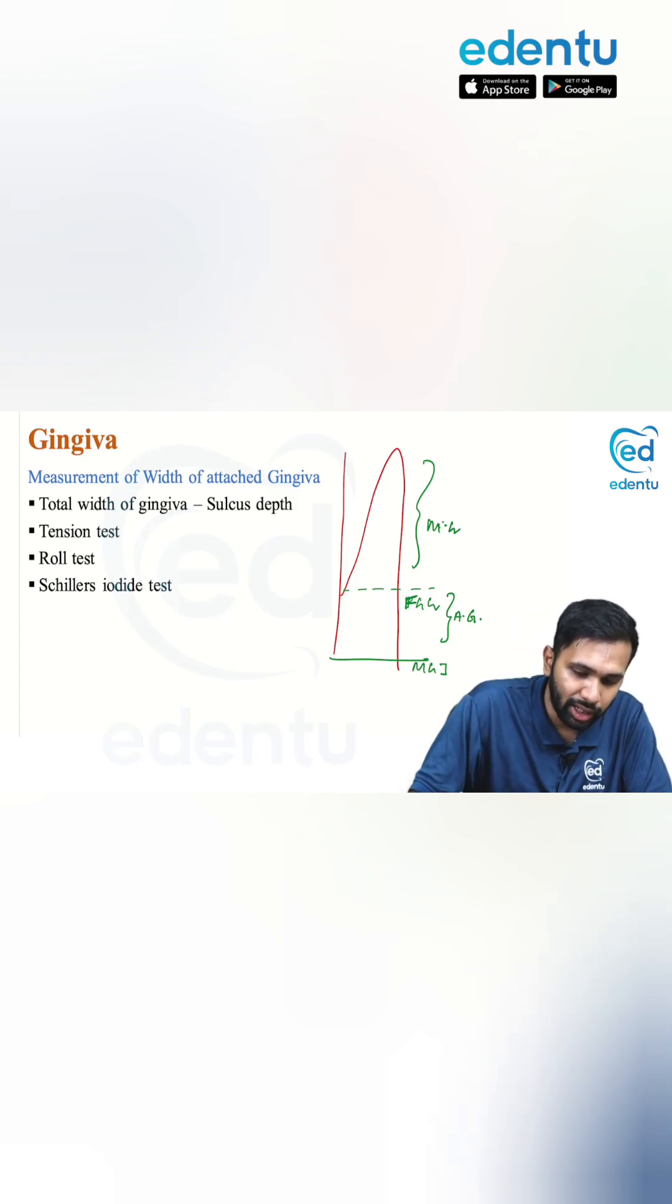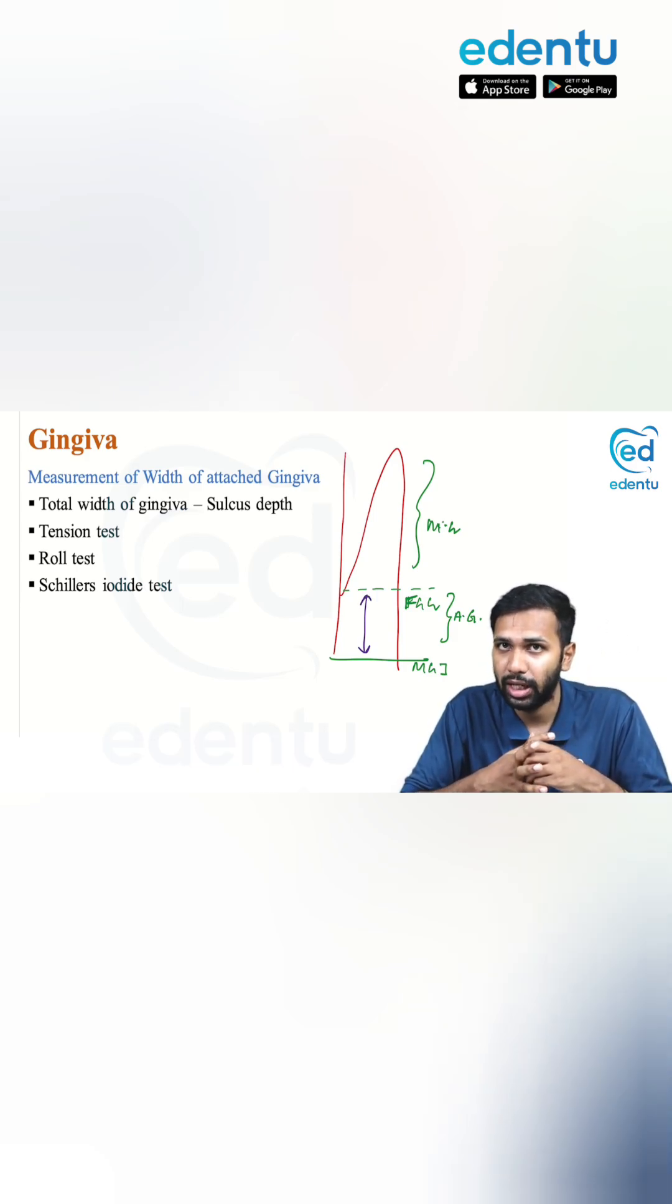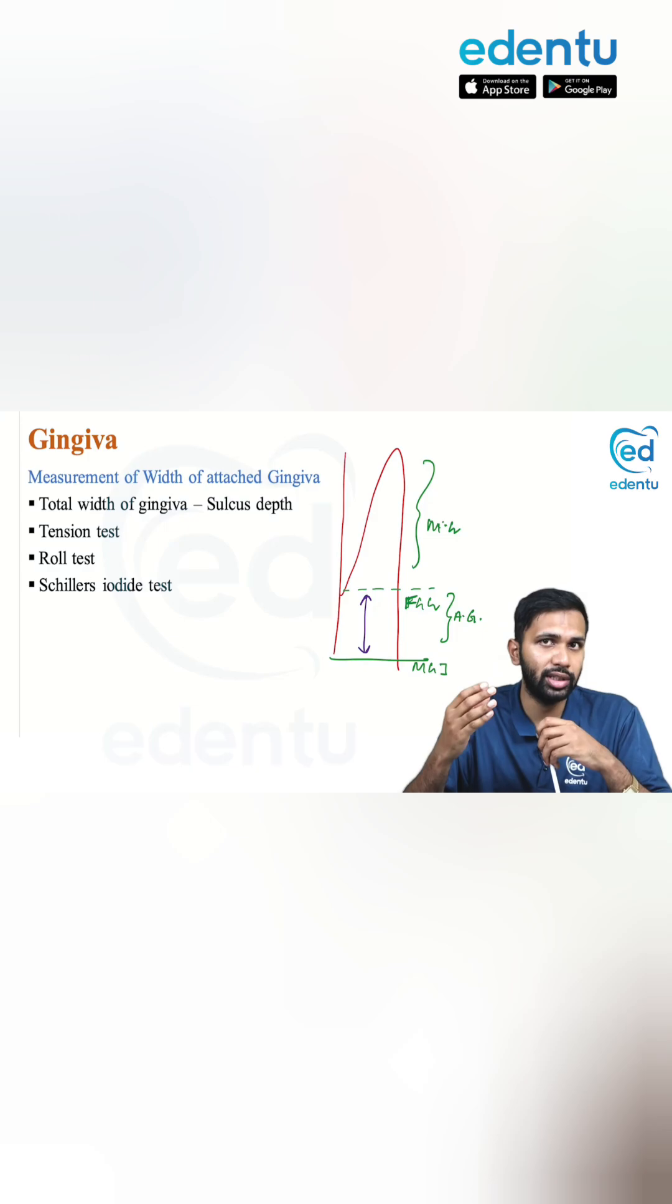Even though we define attached gingiva as extending from the free gingival groove to the mucogingival junction, when you are actually measuring it in a patient's mouth, it is not possible because the free gingival groove is not easy to detect.